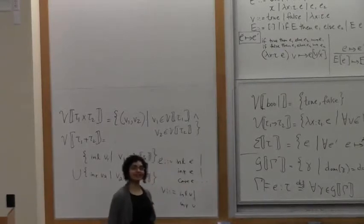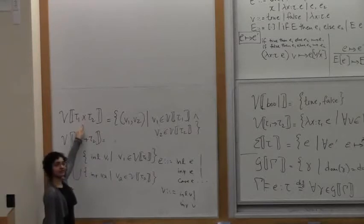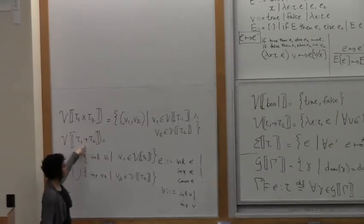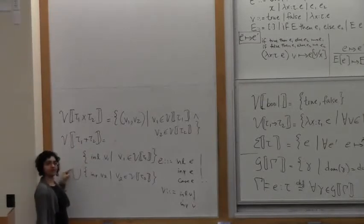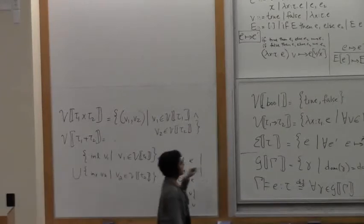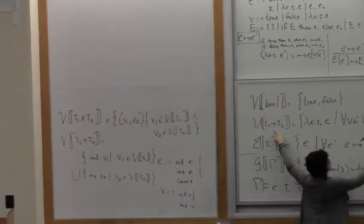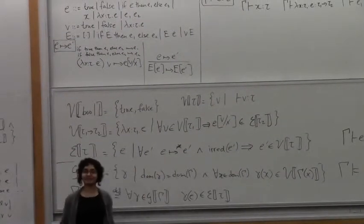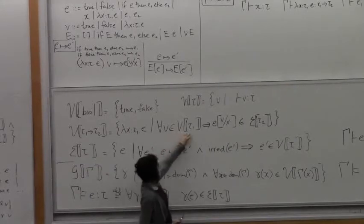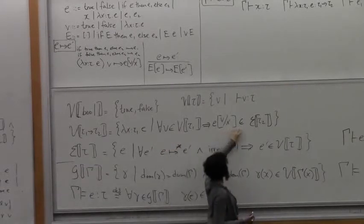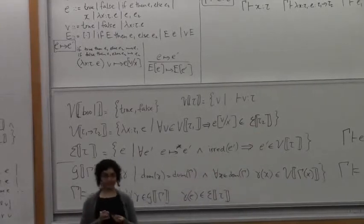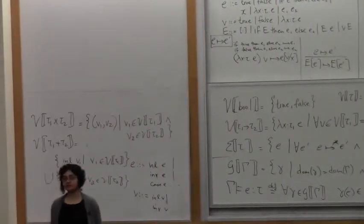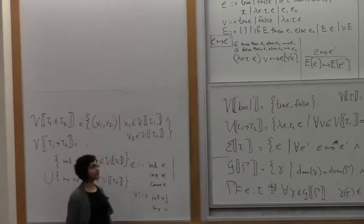We have tau 1 cross tau 2, which corresponds to conjunction, and tau 1 plus tau 2, which corresponds to disjunction or a union. And what about functions? That's essentially an implication — if you give me a V1 of type tau 1, then I get something of type tau 2. We're doing a model construction — we're just interpreting types as sets.